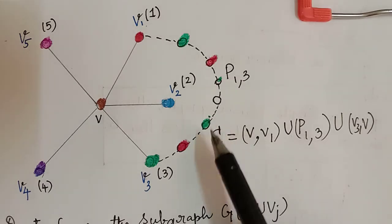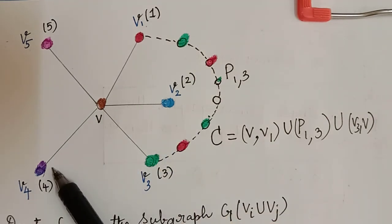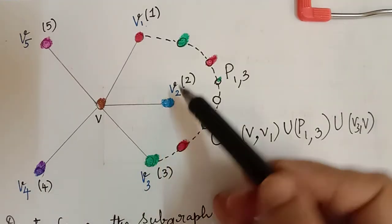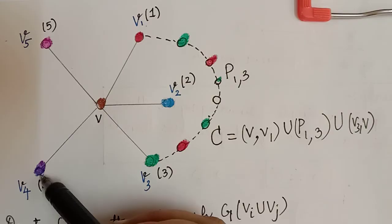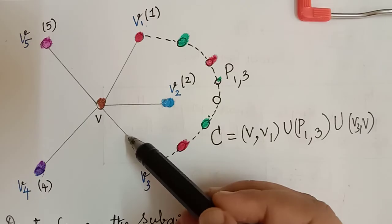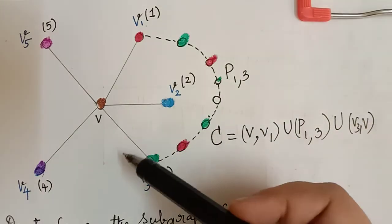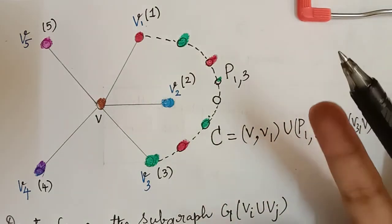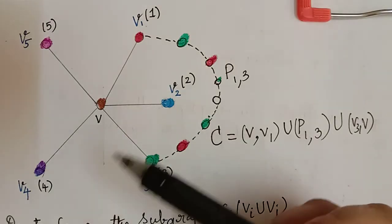We observe that cycle C separates v2 and v4: v2 is in the interior of C and v4 is in the exterior of C. By the Jordan curve theorem, the path P_{2,4} must meet the curve C at some point. This point must be a vertex since G is planar. But this is impossible because the vertices of P_{2,4} have colors 2 and 4, whereas no vertex of C has either of these colors. This contradiction shows G cannot be 6-vertex colorable.